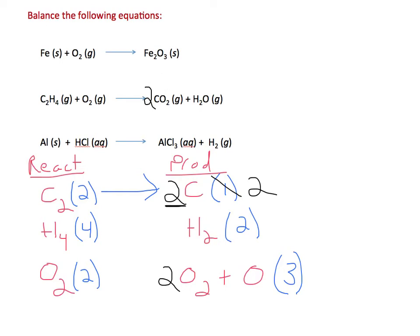So now, if we recalculate this, now we no longer have just 3 oxygen. We have 2 times 2 is 4 plus 1 more, so we have a total of 5 now over here.